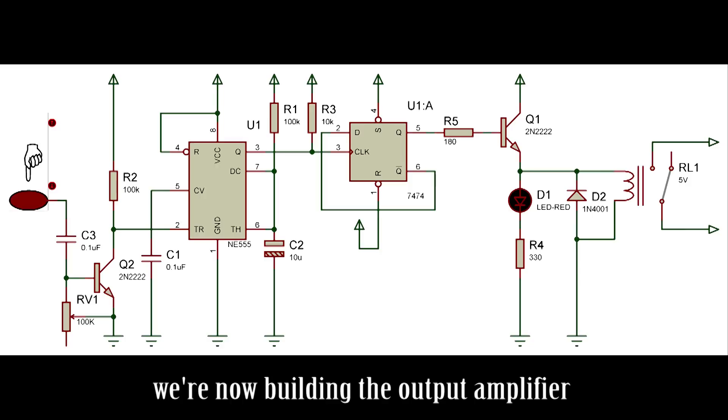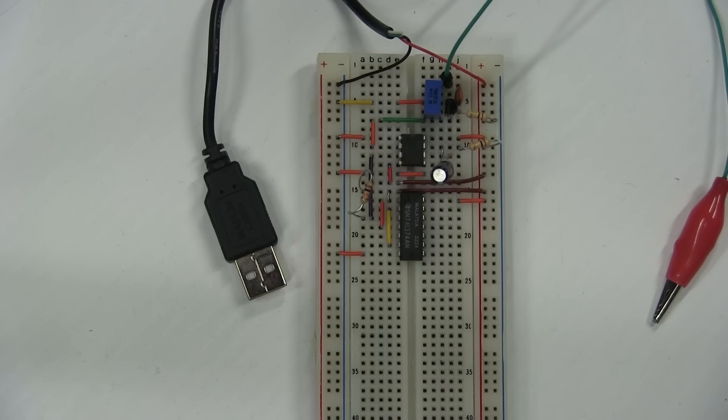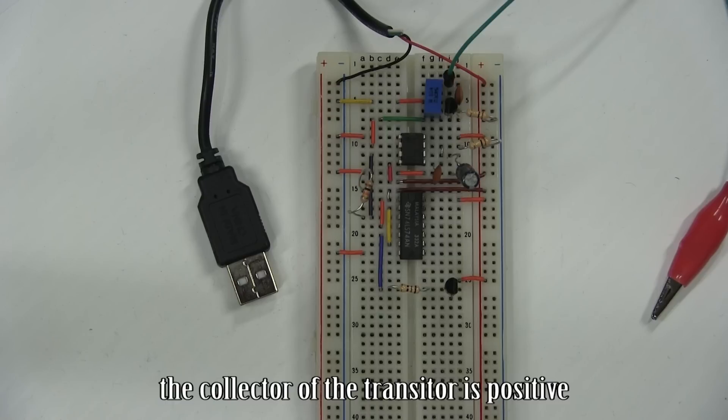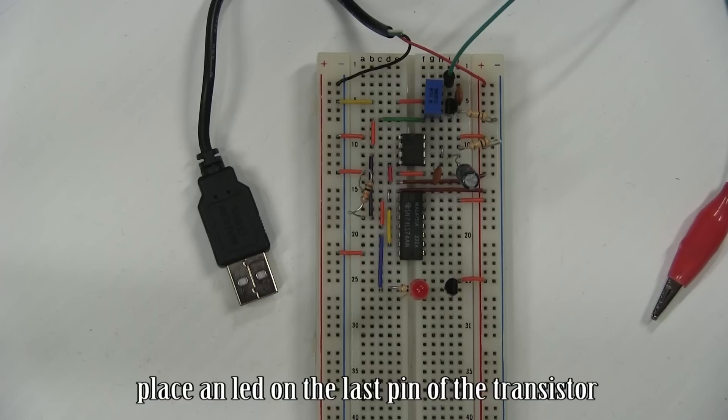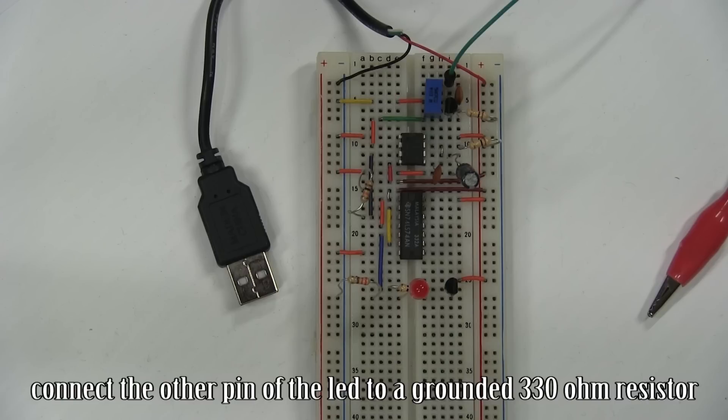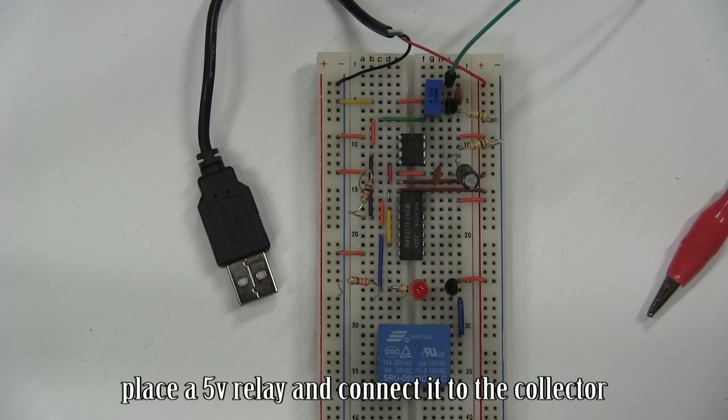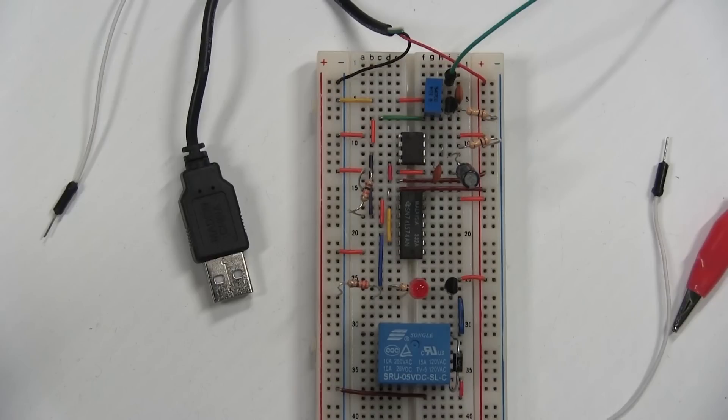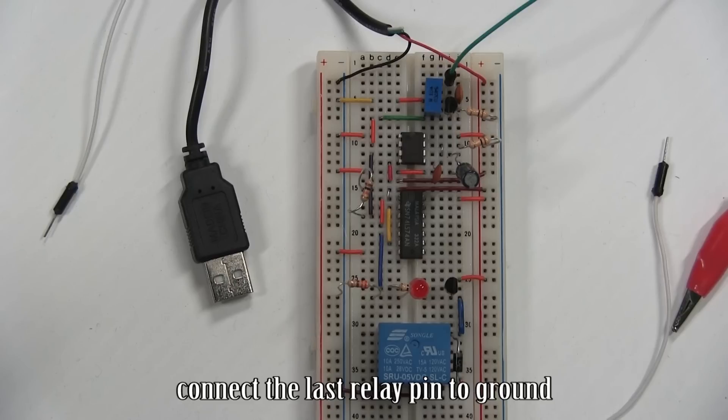We are now building the output amplifier. Connect pin 5 to the base of the 2N2222 via a 180 ohm resistor. The collector of the transistor is positive. Place an LED on the last pin of the transistor. Connect the other pin of the LED to a grounded 330 ohm resistor. Place a 5 volt relay and connect it to the collector. Add a diode in reverse between the two solenoid relay pins. Connect the last relay pin to ground.